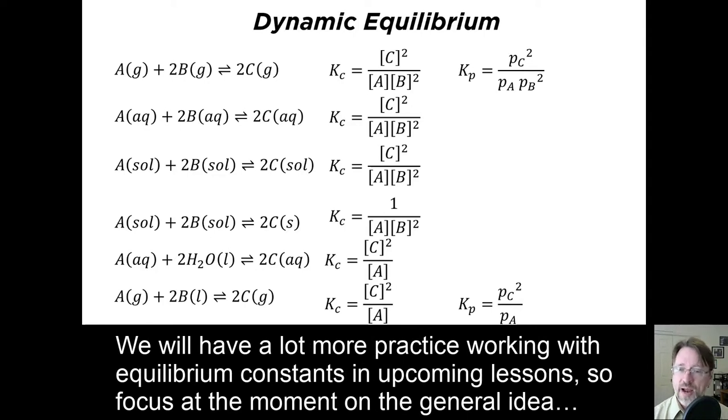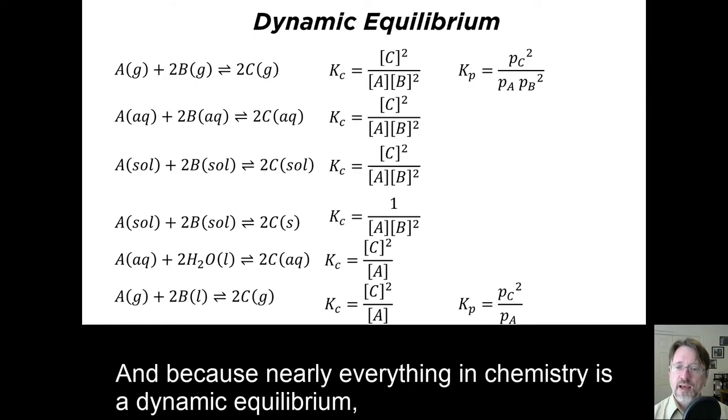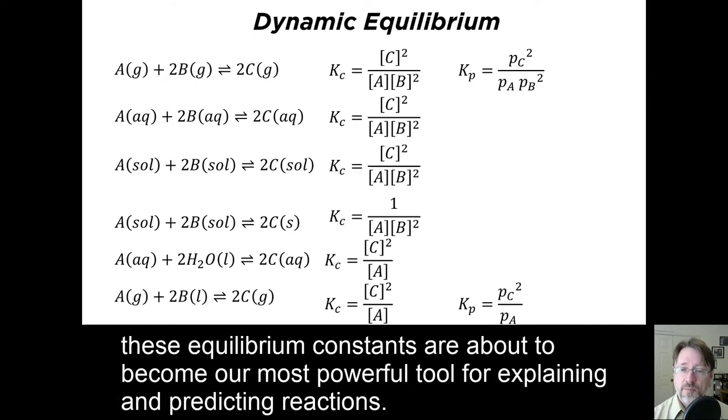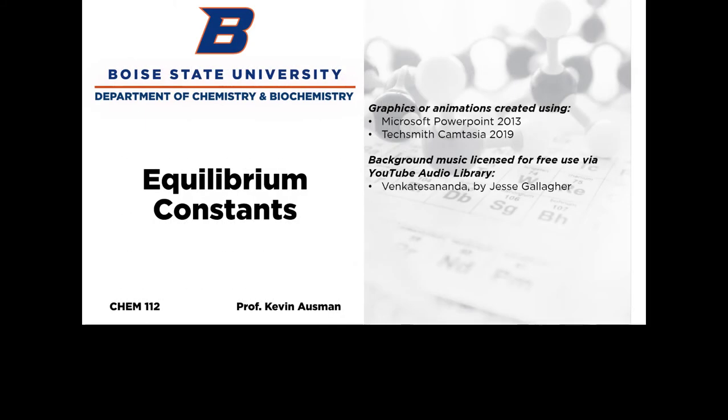We will have a lot more practice working with equilibrium constants in upcoming lessons. So focus at the moment on the general idea. Equilibrium constants are a way to quantify the amounts of reactants and products in a dynamic equilibrium. And because nearly everything in chemistry is a dynamic equilibrium, these equilibrium constants are about to become our most powerful tool for explaining and predicting reactions.